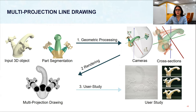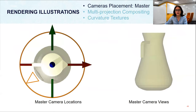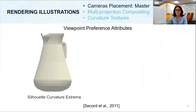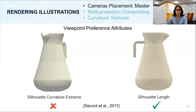The image is now a multi-projection line drawing, and the main steps to design it are camera placement, compositing, and generation of texture. The first step is placement of the master camera, which helps combine the multiple views into one. We select the master camera so that it displays all parts clearly — in the case of a teapot: the main container, the handle, and the spout. We test multiple attributes from the work of Secorte et al. to select the master camera viewpoint. One attribute results in a view where the handle is not visible, which is not acceptable, while the view we select based on silhouette length shows all parts clearly.